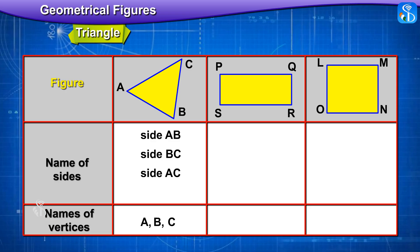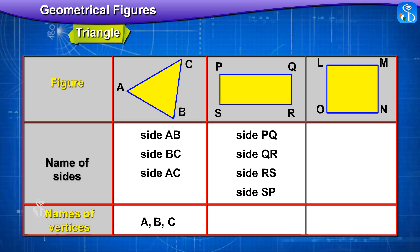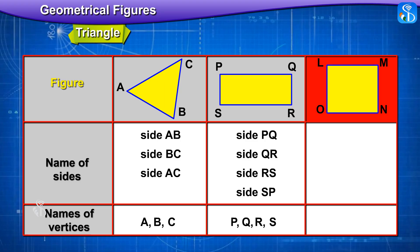What is this figure called? Rectangle PQRS. Name the sides: side PQ, side QR, side RS, side SP. Name the vertices: P, Q, R, S.